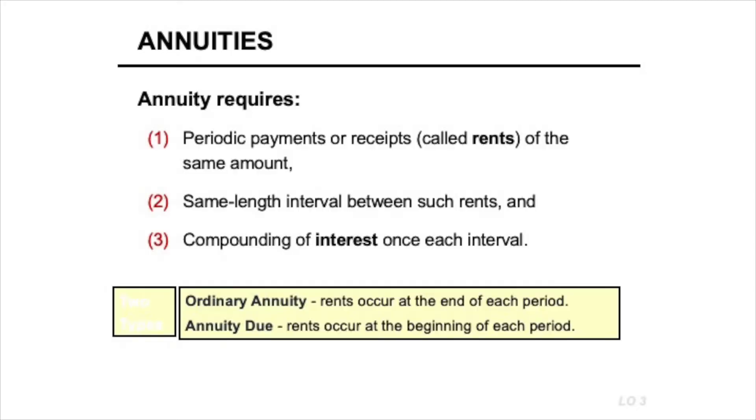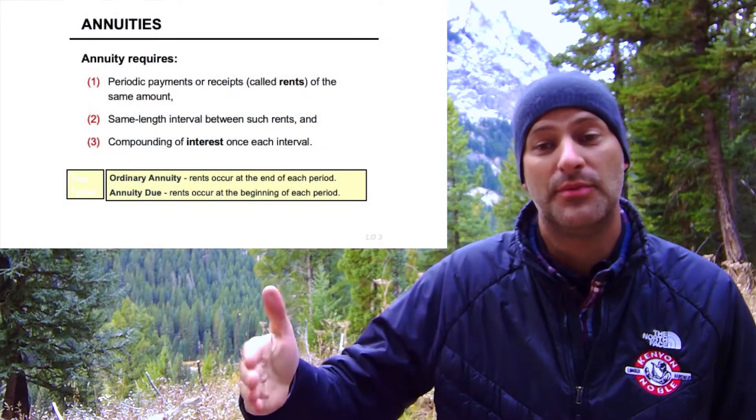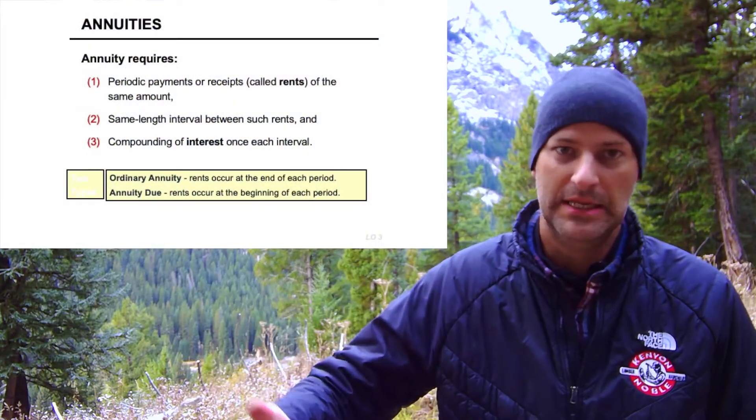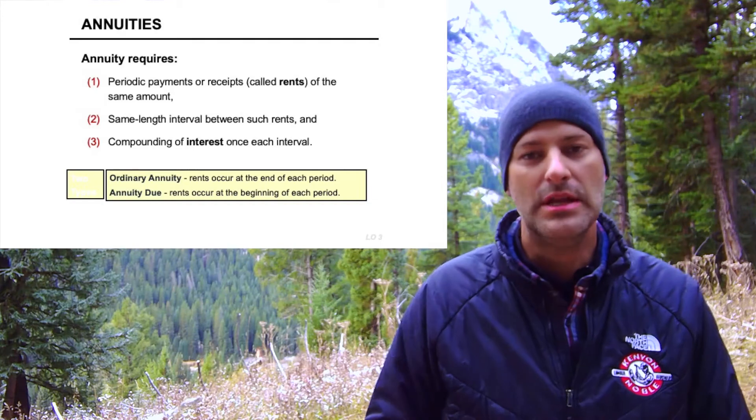For example, if I want to make an investment and this investment is going to provide me ten thousand dollars every year for the next five years, what's that worth to me today? That's an annuity. So what is an annuity? An annuity is a periodic payment or receipt — these are called rents. Typically they have to be of the same amount; if they're not the same amount, you have to calculate the present value of each one separately.